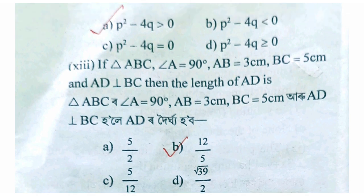If triangle ABC has angle A equal 90 degrees, AB equal 3 cm, BC equal 5 cm, and AD perpendicular to BC, then find the length of AD. The point is b squared minus ac equal to 0, and BC equal to 0.